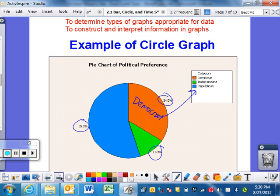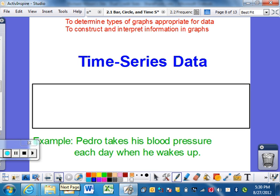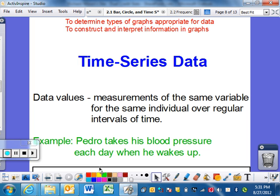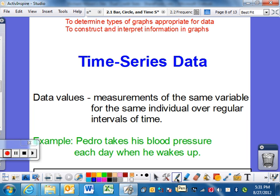Time series data, i.e., a line graph. You've all seen this before. Measurement of the same variable. That's what's important. You have to have the same variable over a regular period of time. So Pedro takes his blood pressure each day when he wakes up. He can put that into a time series or line graph.